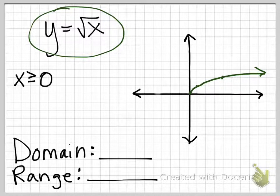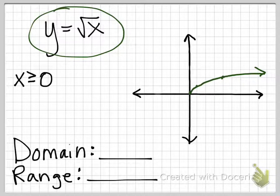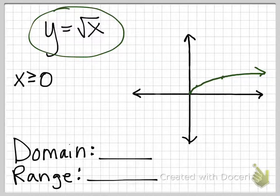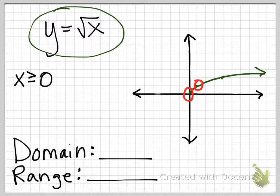We're going to do some transformations where we will shift this left and right and up and down, and we will stretch it or shrink it. But this is what the basic one looks like. The important points to remember are that it goes through the origin and it goes through (1, 1), because when our slope changes, that's what's going to change for us.